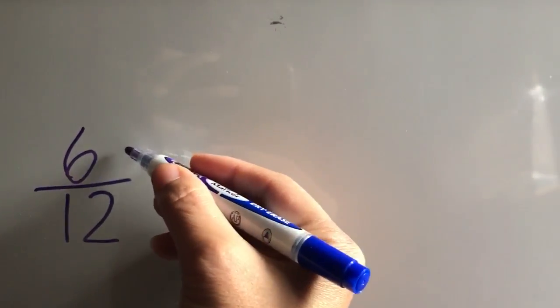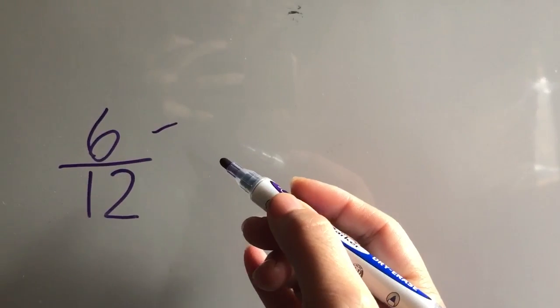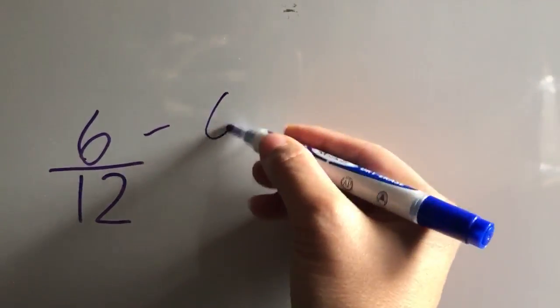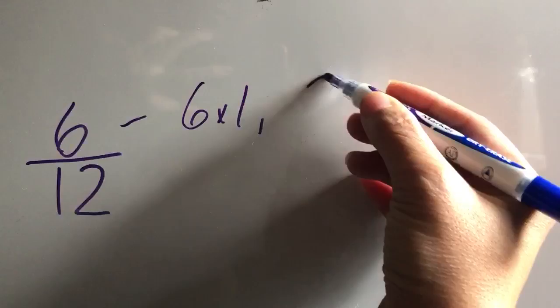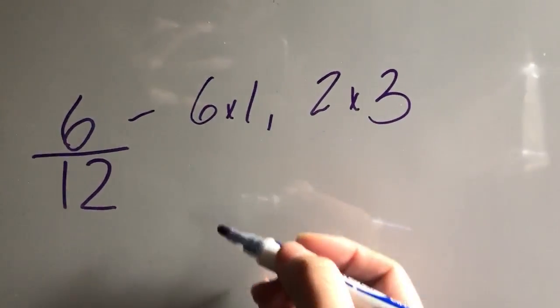Okay, the first thing I need to do to simplify is I have to find the factors that multiply to get each number. So 6 times 1 gives me 6, 2 times 3 gives me 6, that's it.